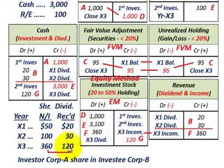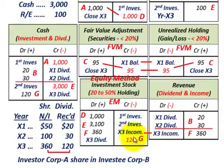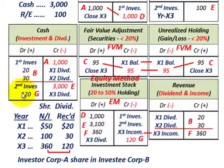The last entry is the dividend received in year X3 — entry G. Under the equity method, dividends reduce the investment stock account. So we credit the investment stock account by $120,000, and the debit goes to the cash account, as Corp A received $120,000 in cash for those dividends.